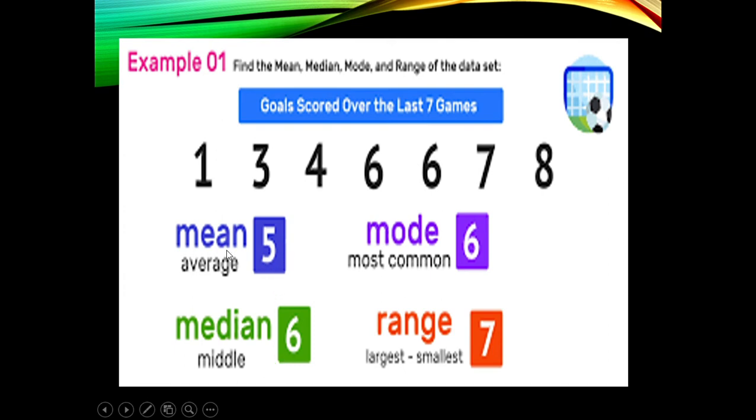So how do we get the 5? We add this 1 plus 3 plus 4 plus 6 plus 6 plus 7 plus 8. And the total of which is divided by 1, 2, 3, 4, 5, 6, 7, divided by 7. So we get the 5.